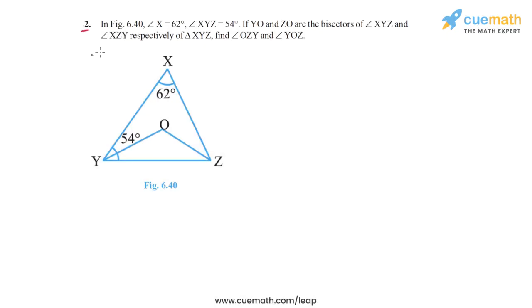The problem statement in question 2 says in figure 6.40, angle X is 62 degrees, this angle 62 degrees. Angle XYZ is 54 degrees, so this whole angle here, XYZ is 54 degrees.